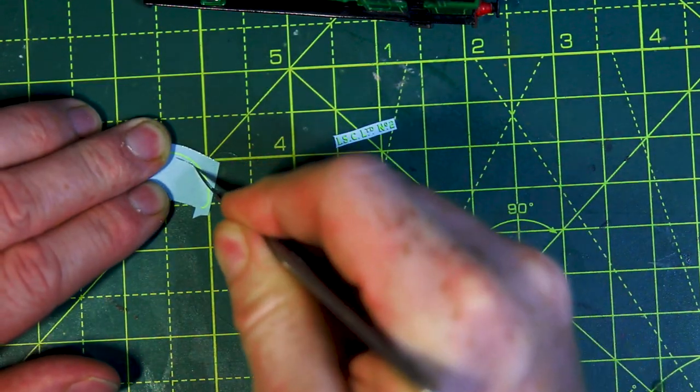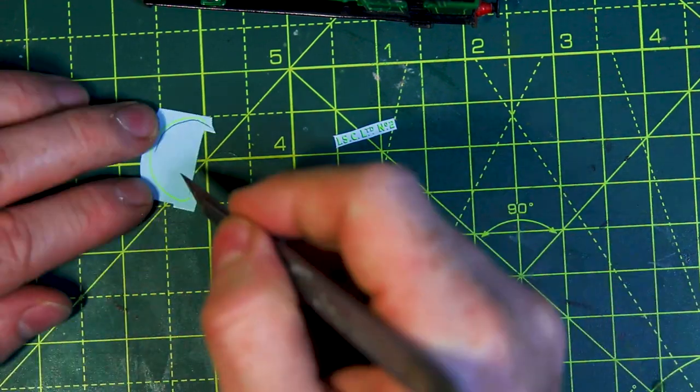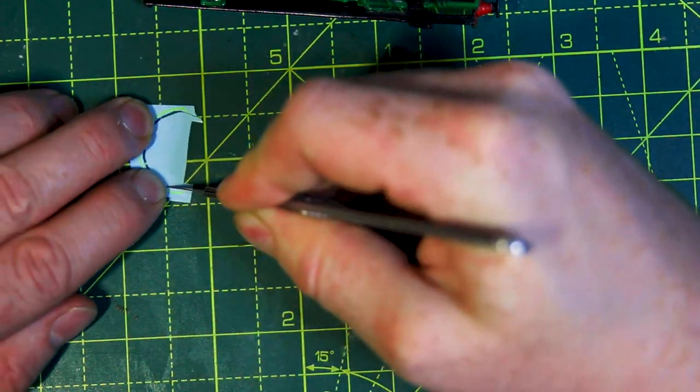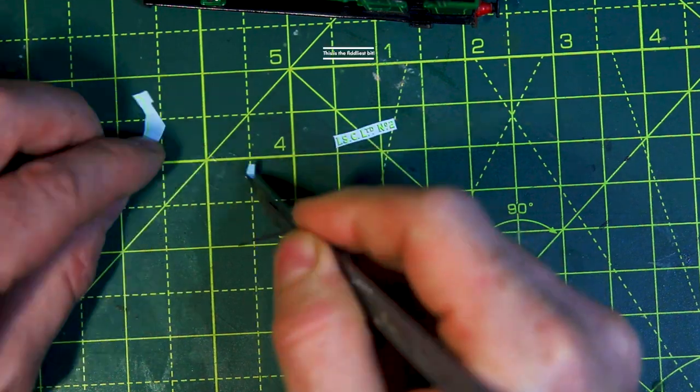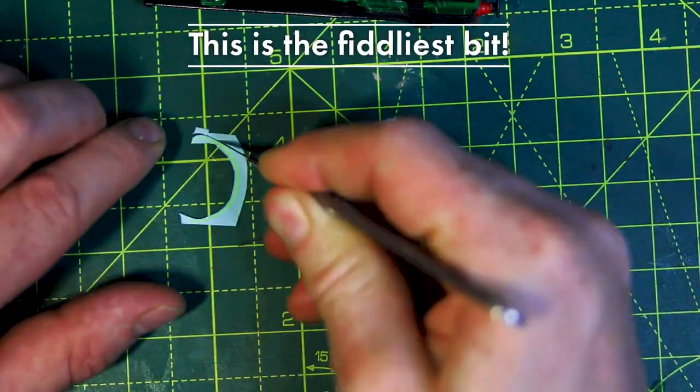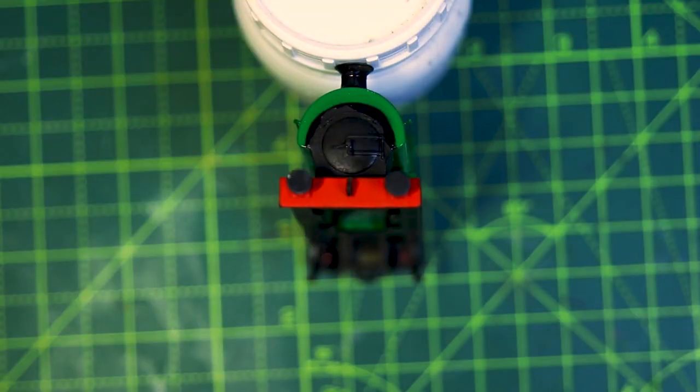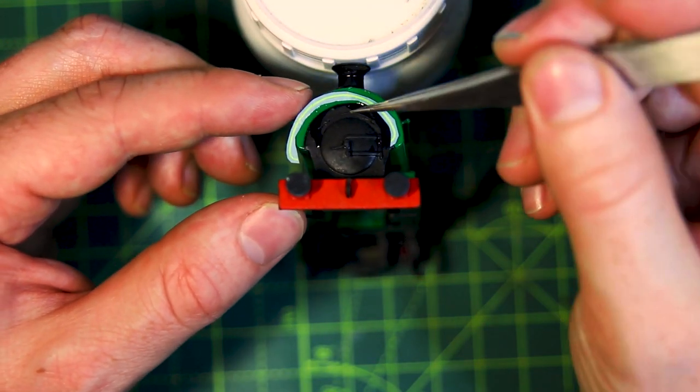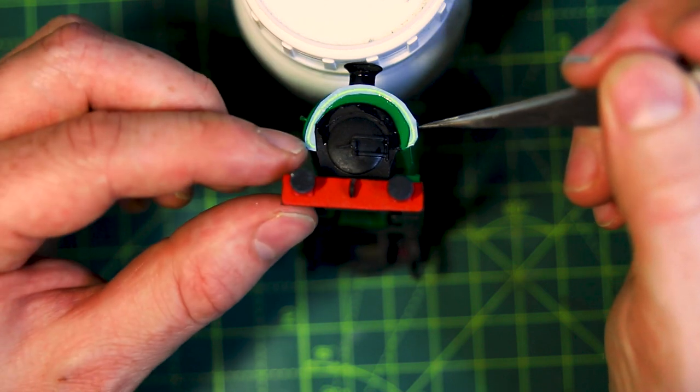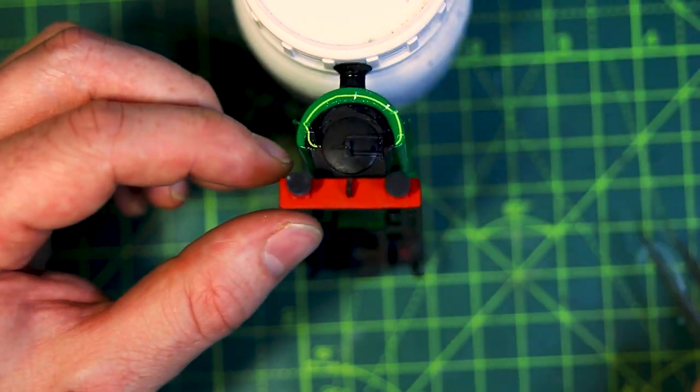By far the trickiest but most rewarding bit was the front lining. Here I have cut it as close as I dare to the yellow. Propping the loco up, I gently teased it off trying not to fold it or drop it. Going slow and steady is key here.